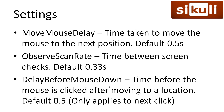And Delay Before Mouse Down is the time before a mouse is clicked after moving to a click location. By default it's half a second. However, if you set this value to 0, it will only be instant on the next click — it will then reset back to half a second. If you want to continue having a fast click, you must repeatedly set this to 0.